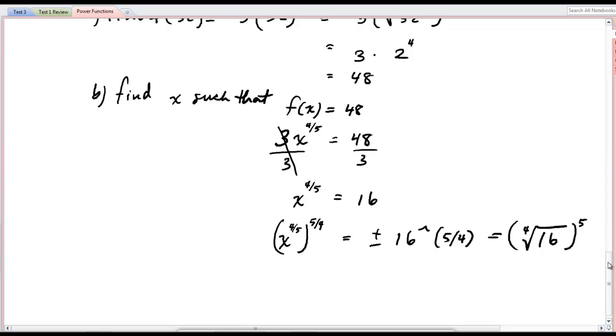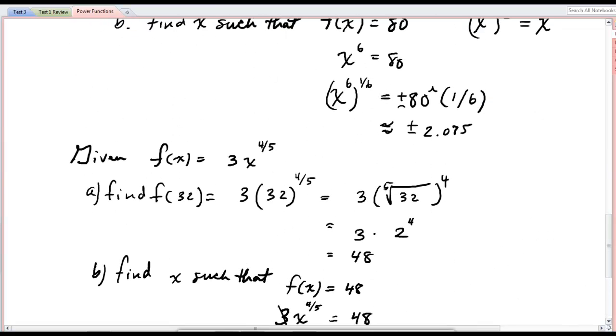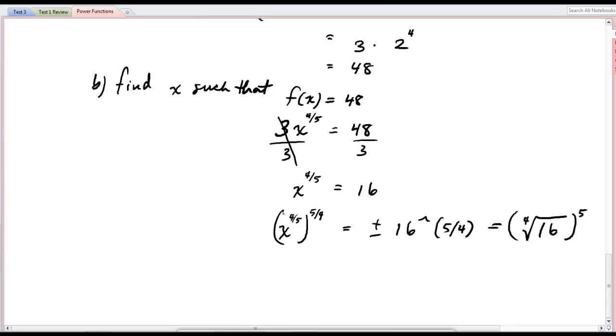Up here, first of all, it was an odd root, but secondly, it was already part of the problem. Down here, there wasn't any fourth root that was part of this problem. There was a fifth root, and I'm trying to undo it. It was a 4 fifths power. So, to undo that, I do the 5 fourths power. I'm bringing this into play, and because I am bringing into play a fourth root, I have to write plus or minus.